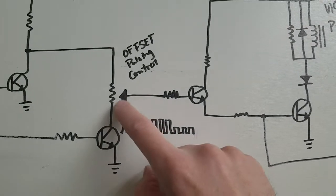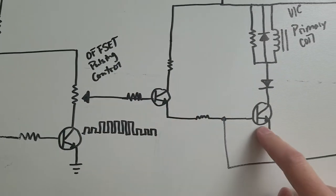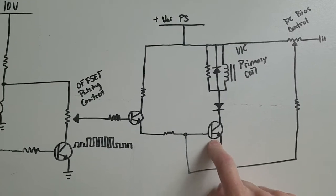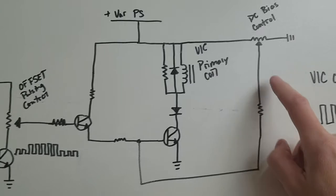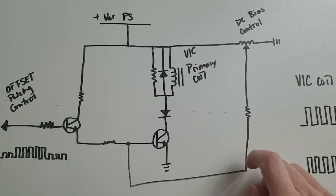So I took those into another 2N 2222 and those drove the base of a TIP 120 transistor. Then here I also had a DC bias control, another potentiometer.